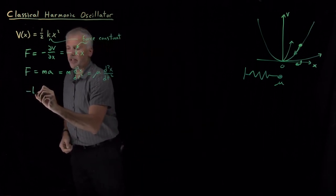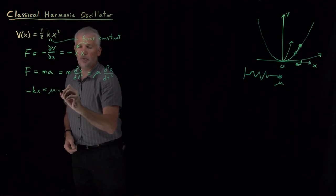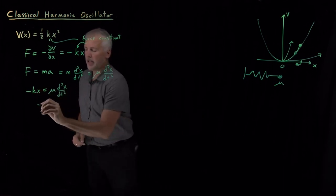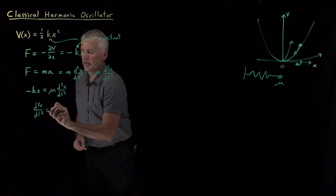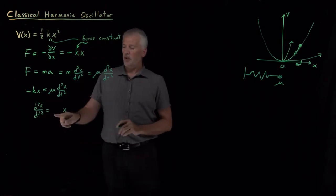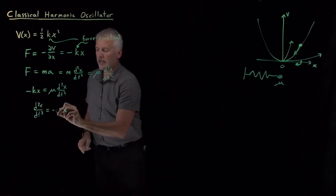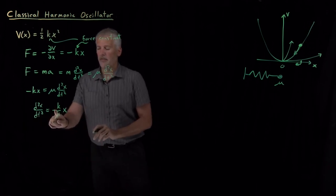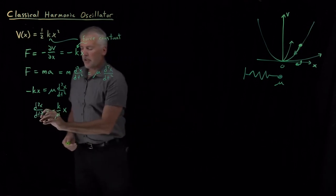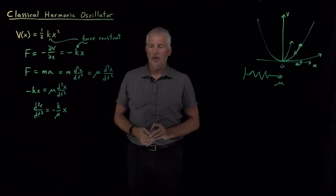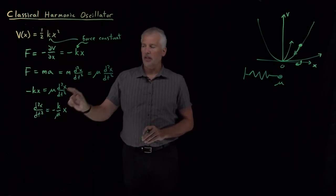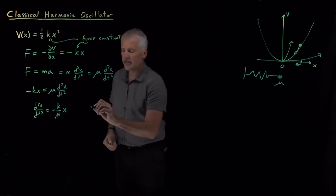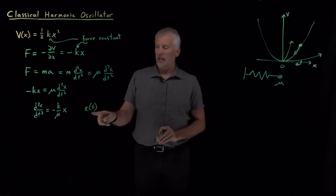Equating those two terms: −kx = μ · d²x/dt². Rearranging, putting d²x/dt² on the left and x on the right with constants: d²x/dt² = −(k/μ)x. So what must be true of any system with this quadratic potential energy is that the second derivative of position — the acceleration — equals negative the force constant divided by the reduced mass, times the original x.